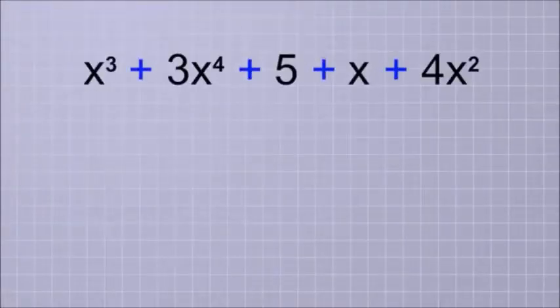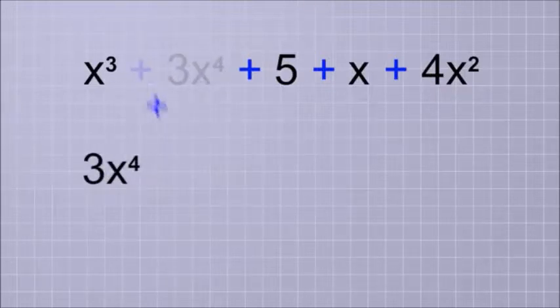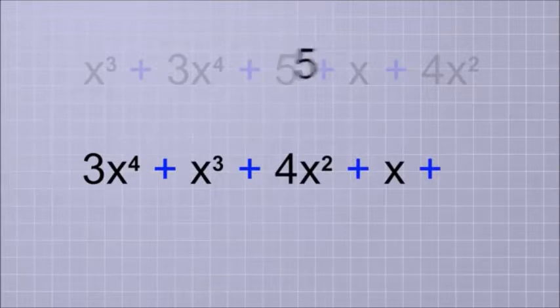For example, this polynomial, which has 5 terms, should be rearranged so that the highest degree term is on the left and the lowest degree term is on the right.